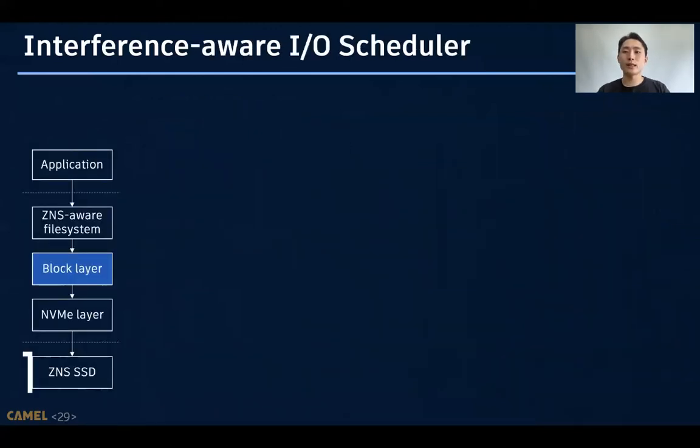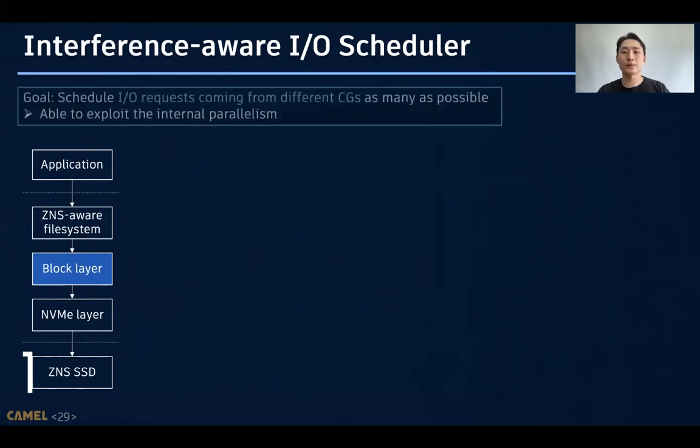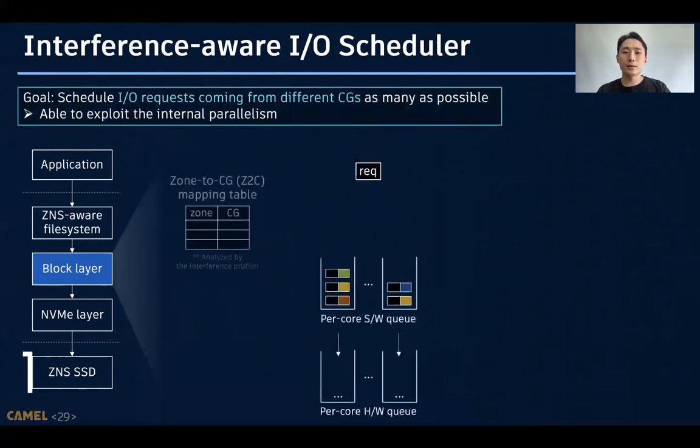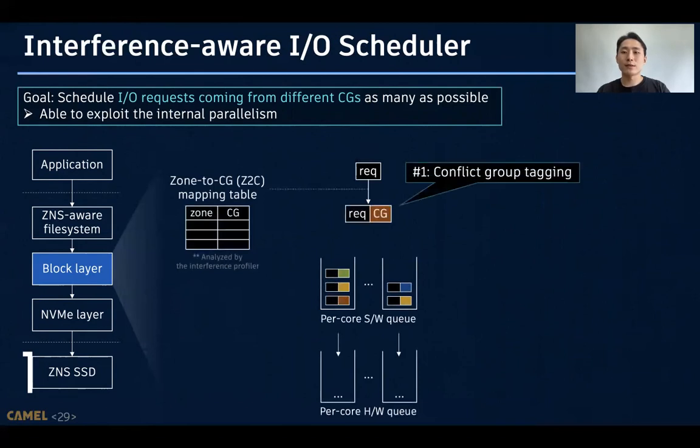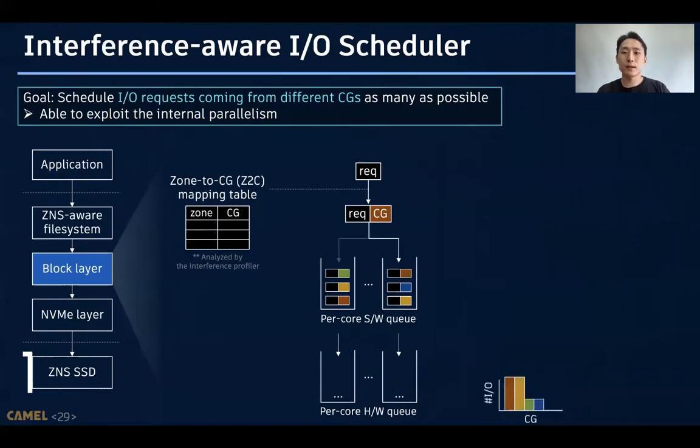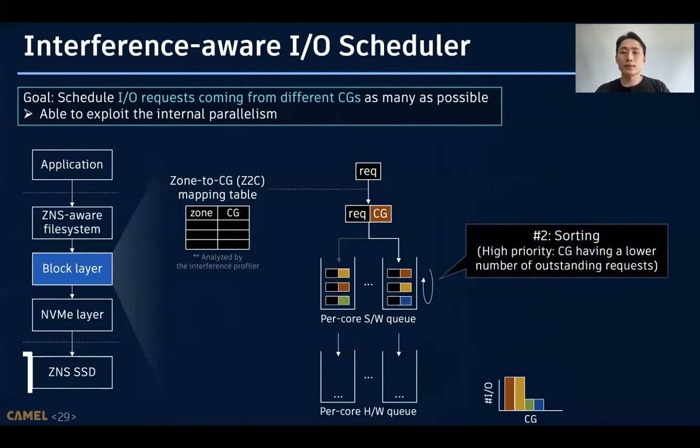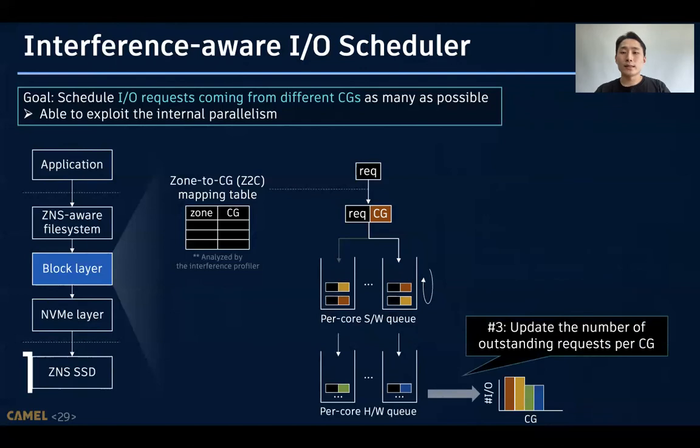Our Interference-Aware IO scheduler is a block-layer IO scheduler implemented in the block layer. Its main goal is to schedule IO requests coming from different conflict groups as many as possible. To this end, when the request arrives, it first looks up the zone-to-conflict group mapping table and tags the corresponding conflict group index to the request. After the tagging process, the scheduler checks the number of IO requests which have been issued for each conflict group. And it modifies the order of requests to give high priority to conflict groups having a lower number of outstanding requests. And when a request is issued to hardware queue, it updates the number of outstanding requests per conflict group. By doing this, we can fairly schedule IO requests across different conflict groups and achieve the goal.